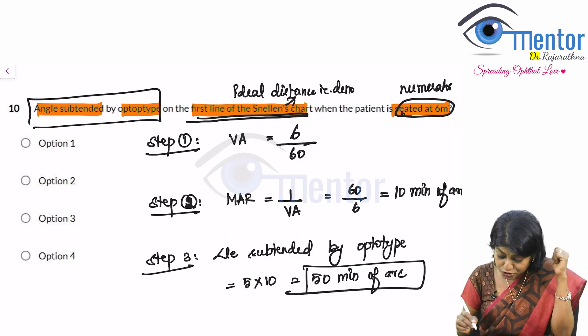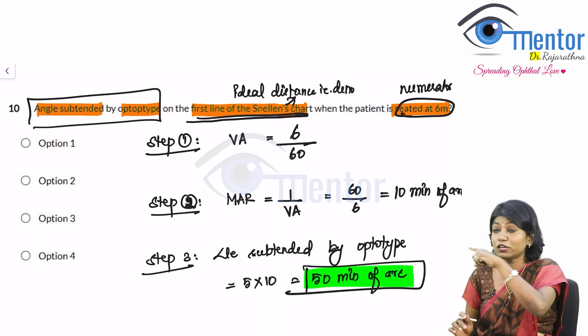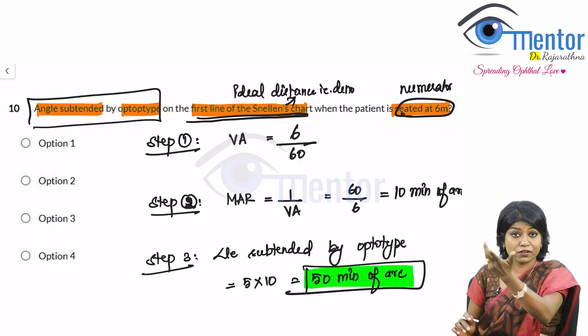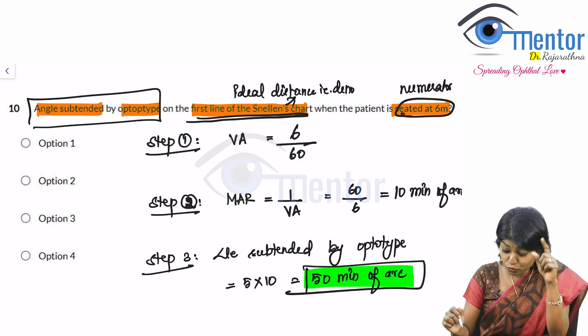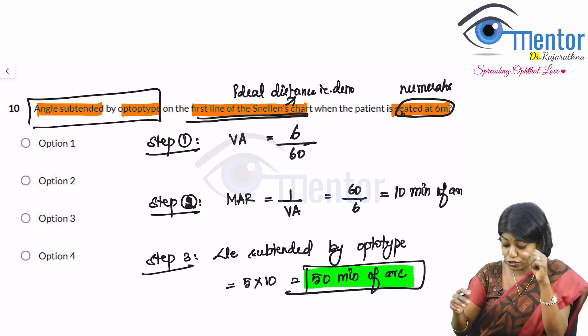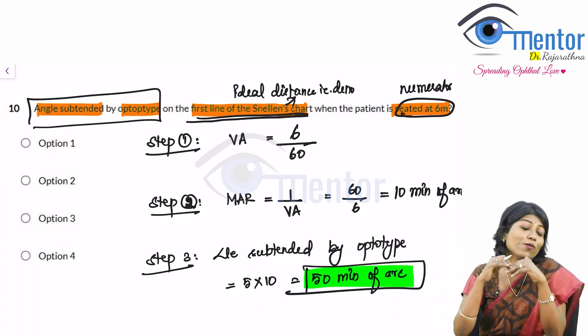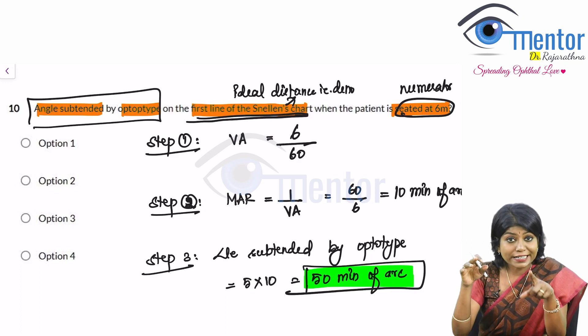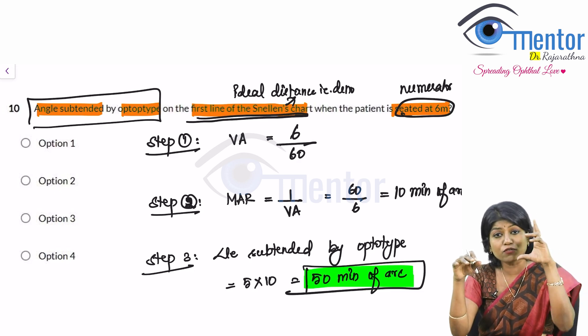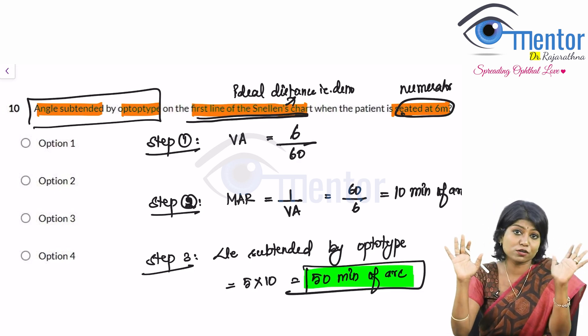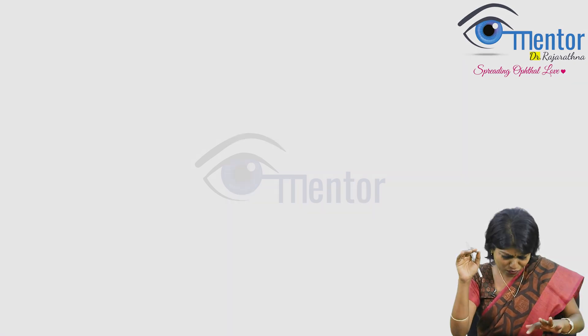So whichever option has 50 minutes of arc. So now you take a look at the four options. They would have given you, they would be very smart to definitely include 10 minutes of arc because you would have stopped at step 2. You would be very happy. So it is not 10. If they ask you minimum angle of resolution for the same setting, then it would be 10 minutes of arc. But because they asked angle of the entire optotype, it would be 50 minutes of arc. It is very simple.